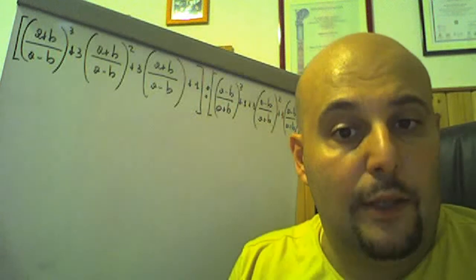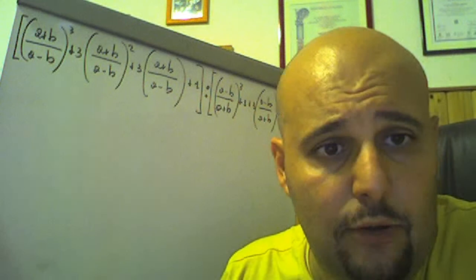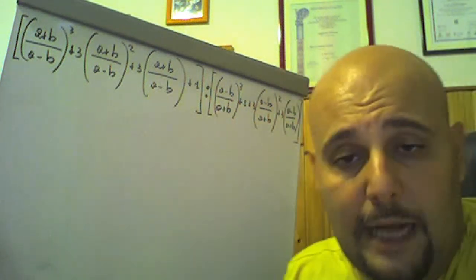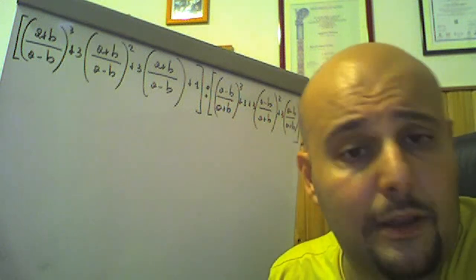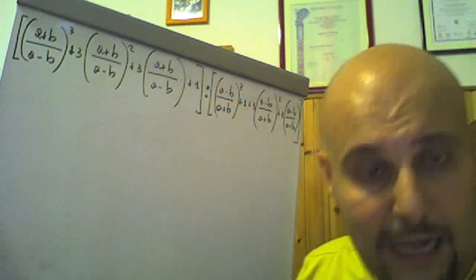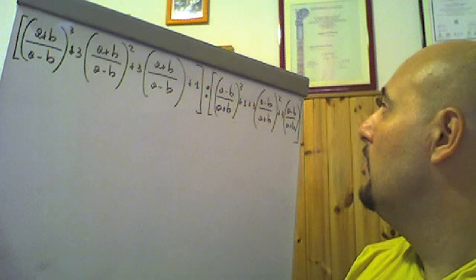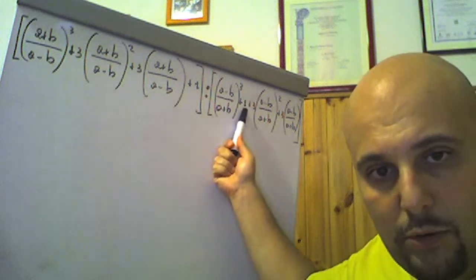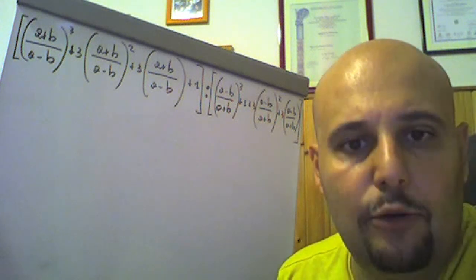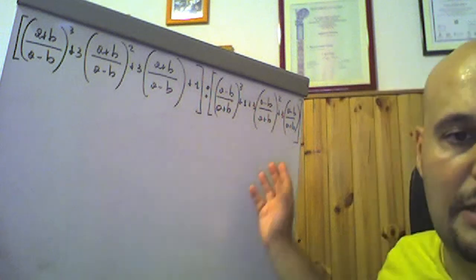Aperta la quadra, aperta la tonda: (a più b) fratto (a meno b), chiusa la tonda al cubo, più 3 che moltiplica, aperta la tonda, (a più b) fratto (a meno b), chiusa la tonda al quadrato, più 3 che moltiplica, (a più b) fratto (a meno b), chiusa la tonda, più 1, chiusa la quadra, diviso, aperta la quadra, aperta la tonda: (a meno b) fratto (a più b), chiusa la tonda al cubo, più 1, più 3 che moltiplica, aperta la tonda, (a meno b) fratto (a più b), chiusa la tonda al quadrato, più 3 che moltiplica, aperta la tonda, (a meno b) fratto (a più b), chiusa la tonda, chiusa la quadra.